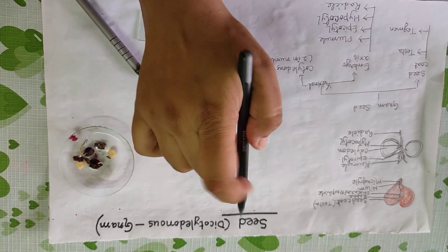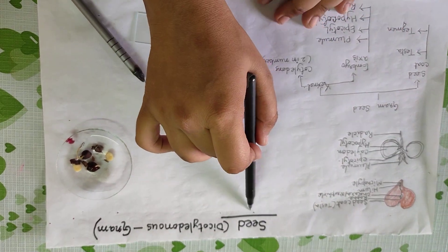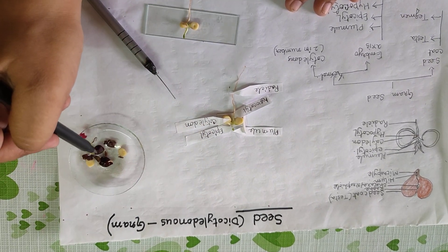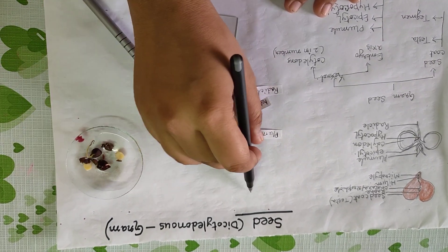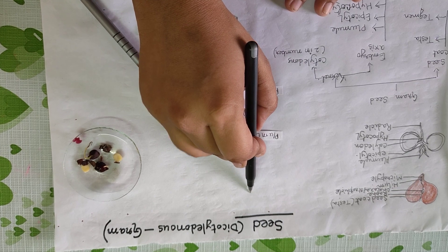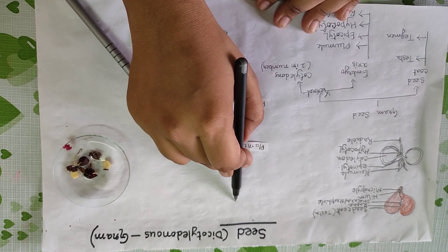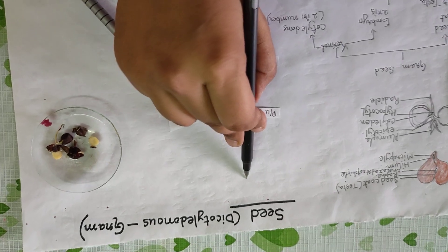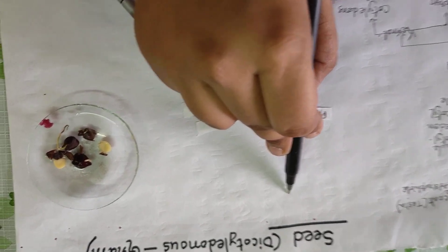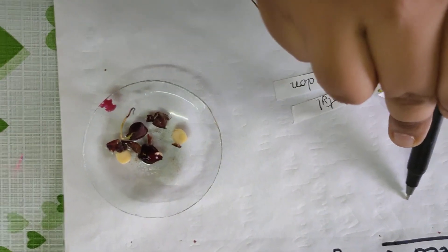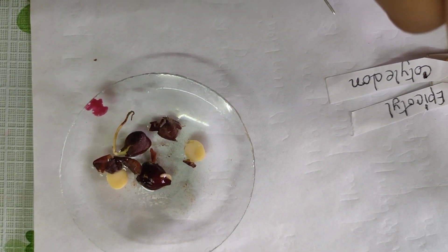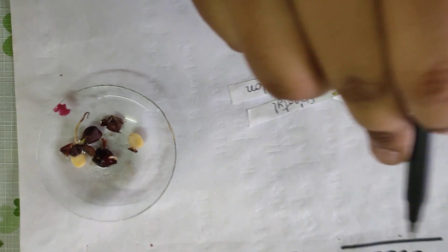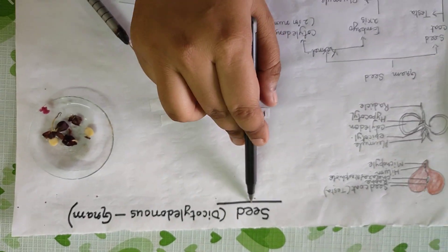I'm going to explain about seed. Here I have taken a dicotyledonous seed, that is gram seed. First I tell you what is seed. After fertilization, the mature ovary transforms into fruit, and inside the ovary one or many ovules are present. After fertilization, this mature ovule transforms into seed.